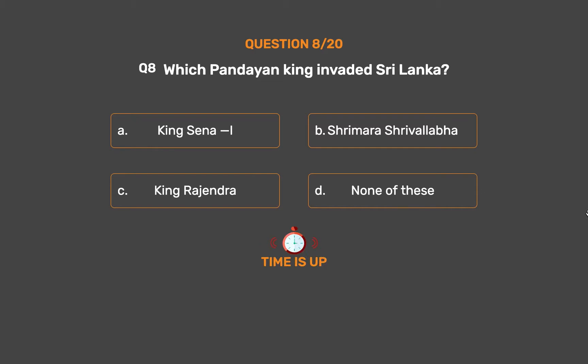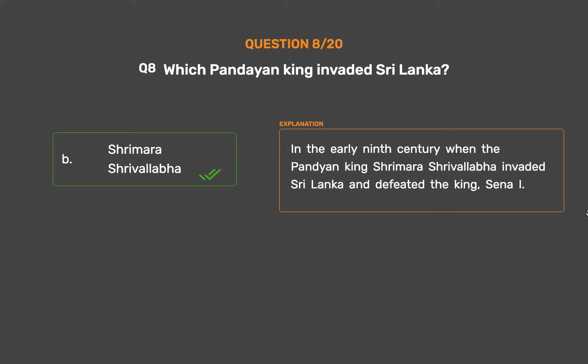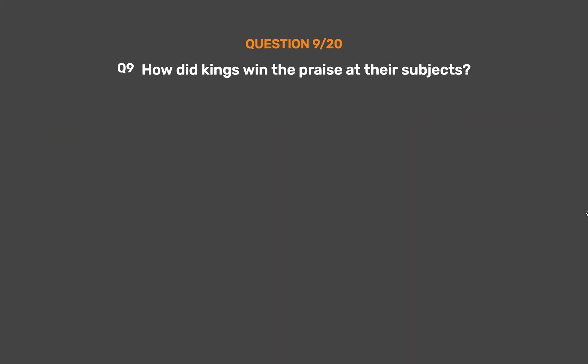The correct answer is Option B: Sri Mara Sri Vallabha. In the early 9th century, the Pandyan king Sri Mara Sri Vallabha invaded Sri Lanka and defeated King Sena I.